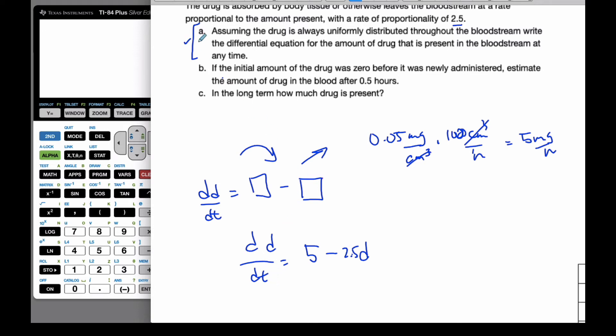All right, so here's part B. So now, if the initial amount of the drug was zero before it was newly administered, estimate the amount of drug after 30 minutes. Well, that means I have to solve this equation here with my initial value of (0,0). (0,0) is my initial value, because it starts with zero at time zero. And then I want to find out when t is equal to 0.5, d equals what? Well, in order to solve this, this is not separable.